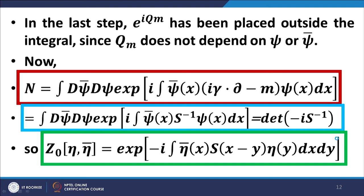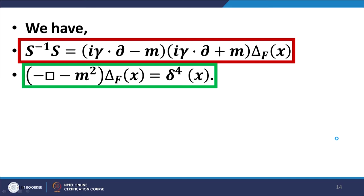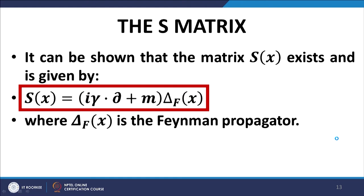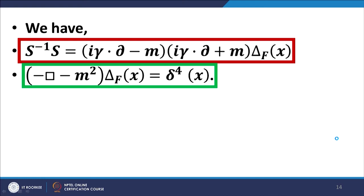Now let us explore the S-inverse matrix we introduced as a simplification tool. We write the S matrix in the form given in the red box — this is nothing but the Klein-Gordon operator, or its negative. The S matrix exists, and using this expression we can establish the S-inverse matrix. We verify that S⁻¹S gives the delta function.